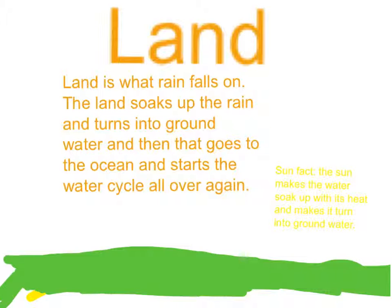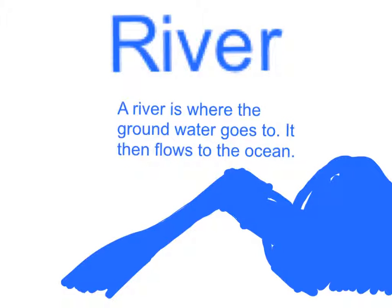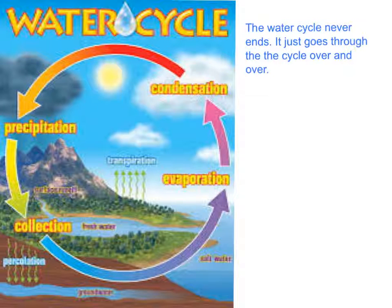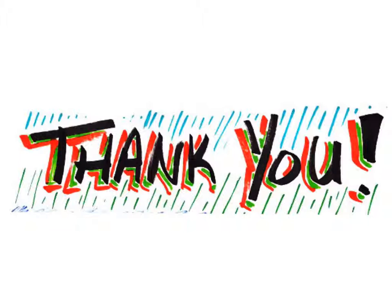Land is what rain falls on. The land soaks up the rain and turns it into groundwater, and then that goes to the ocean and starts the water cycle all over again. Sun fact: the sun makes the water soak up with its heat and makes it turn into groundwater. River is where the groundwater goes to; it then flows to the ocean. The water cycle never ends — it just goes through the cycle over and over. I got my images from Google search. Thank you for watching. Please subscribe.